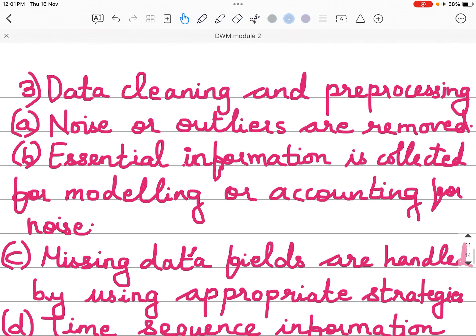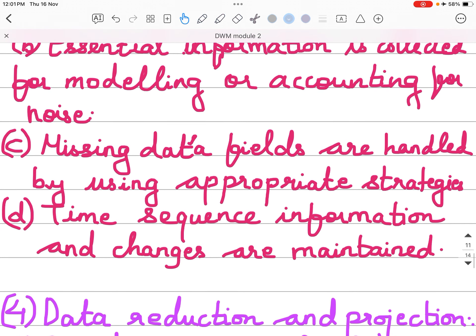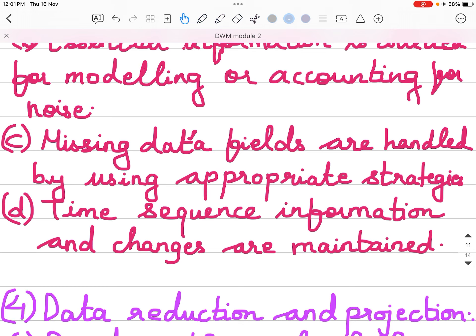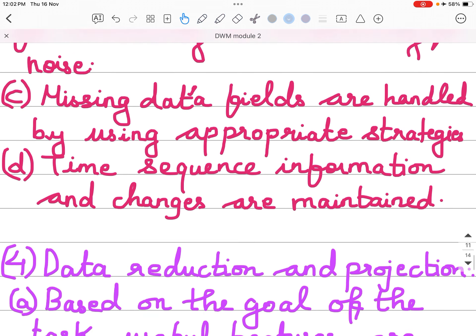For modeling or accounting for noise, missing data fields are handled by using appropriate strategies. Suppose there is a missing data field. You had to insert the employee name, the employee age, the employee email ID, everything. But suppose the employee did not insert the email ID. So that means there is missing data in this case. That missing data will be handled using strategies. Time sequence information and changes are maintained.